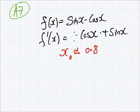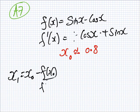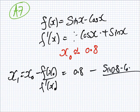So for this one, we use Newton-Raphson's formula. The next guess is the last guess minus f of x0 over f derivative x0. So that would be 0.8 minus fraction sine 0.8 minus cos 0.8 over cos 0.8 plus sine 0.8.